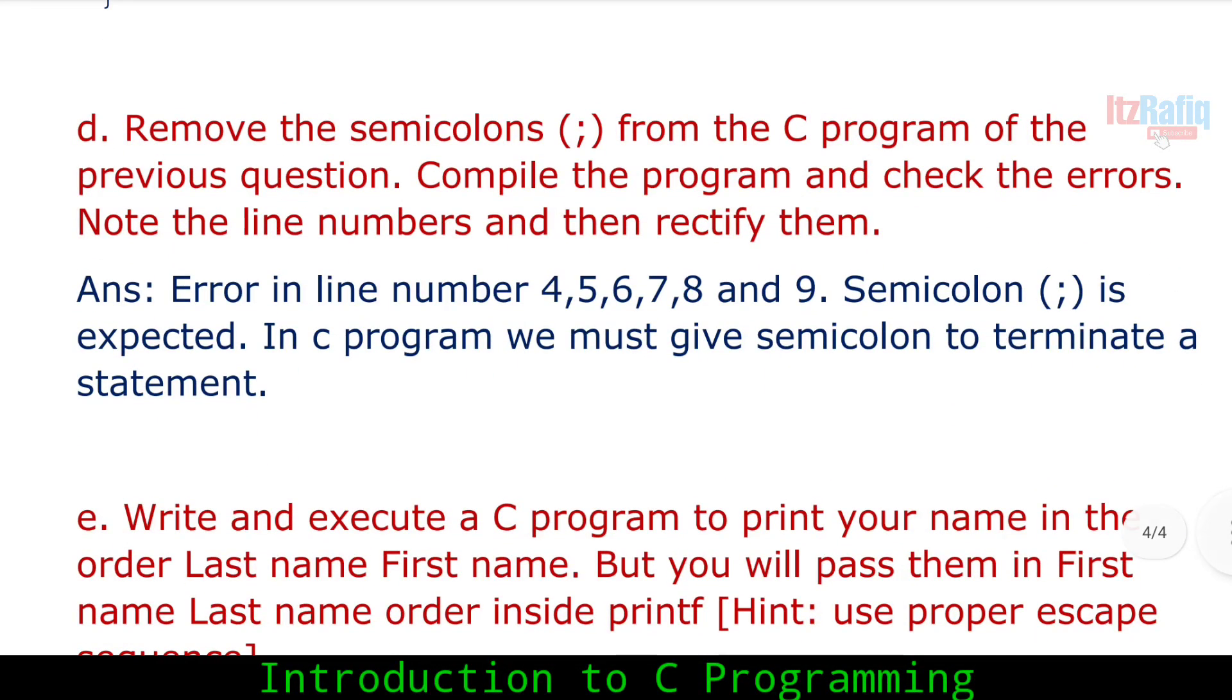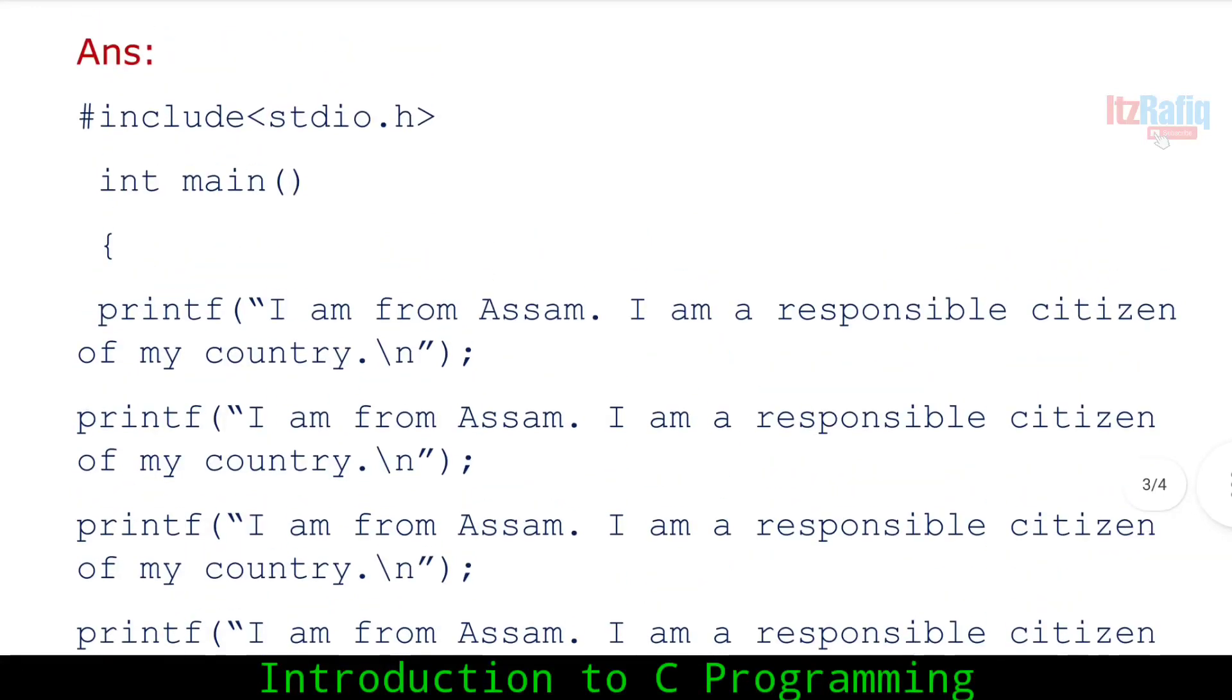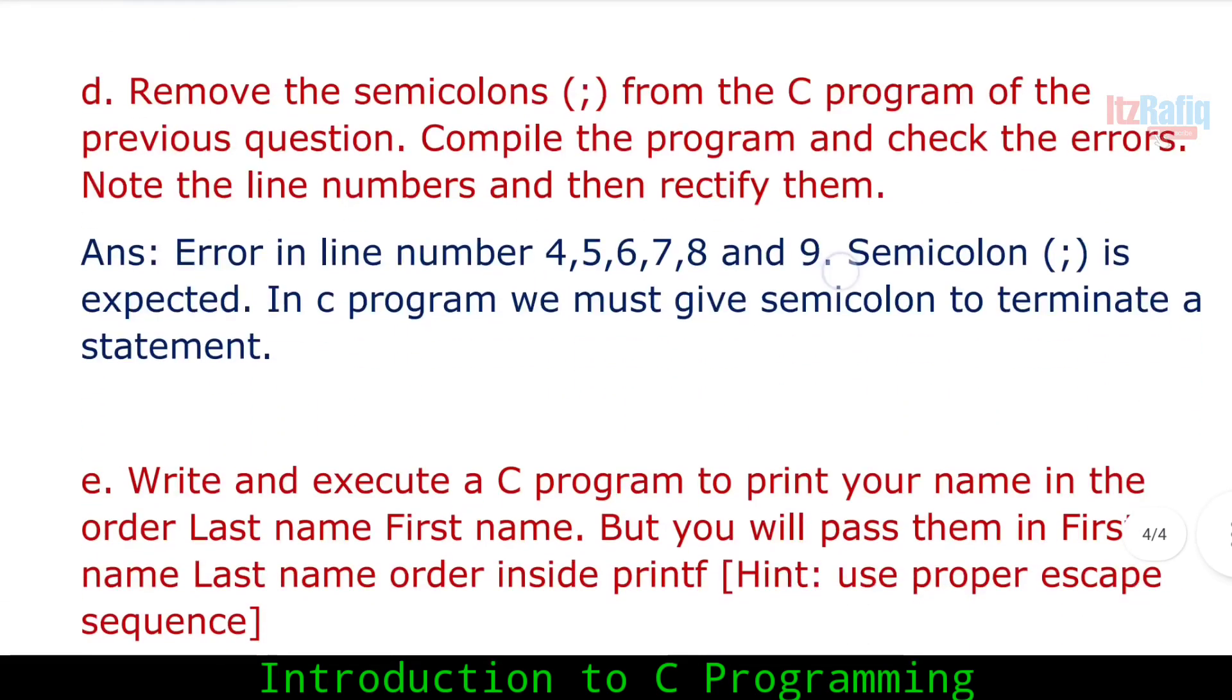Number 7: Remove the semicolons from the C program of the previous question, compile the program and check errors. Note the line numbers and rectify them. Now we will remove the line number for semicolon. The printf statement was line number 4. Include is line number 1, int is line number 2, bracket is line number 3, and printf is line number 4. So line number 4, we remove the semicolon and compile.